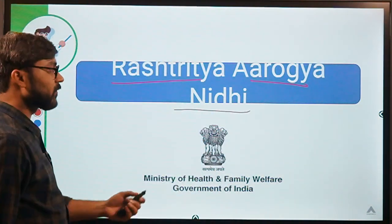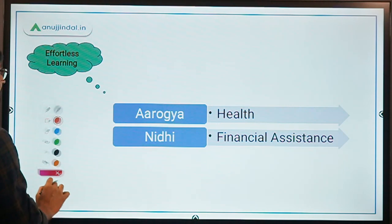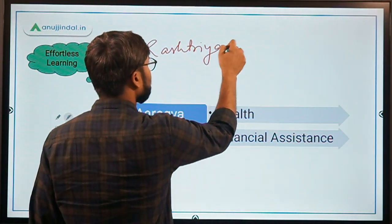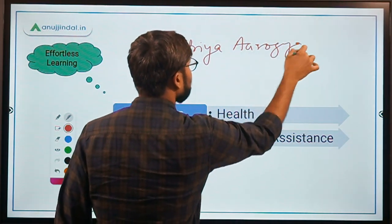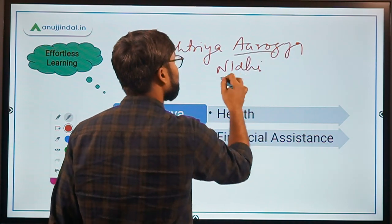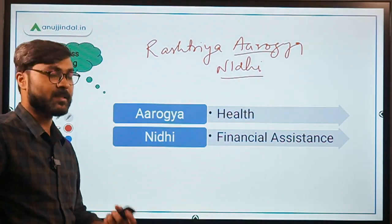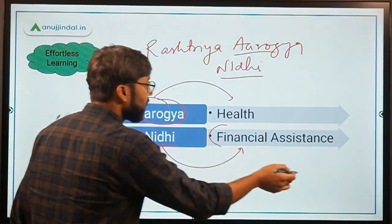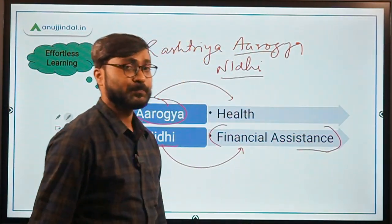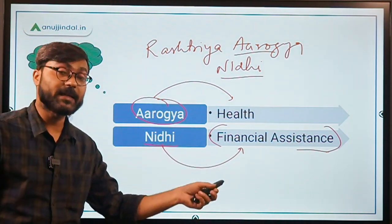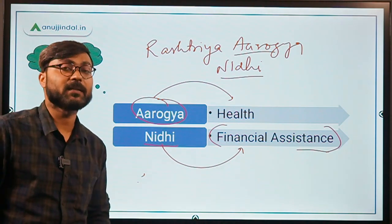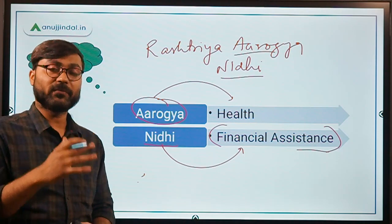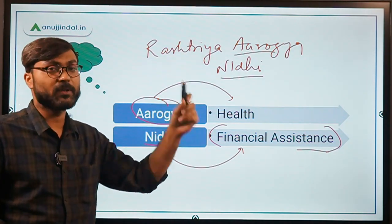From the name of this scheme, we can easily identify its objective. Rashtriya means National, Aarogya means Health, and Nidhi means Financial Assistance. So the financial assistance will be provided for health — specifically for diseases.